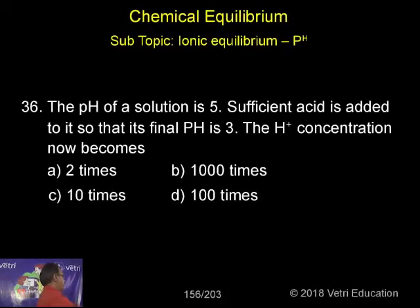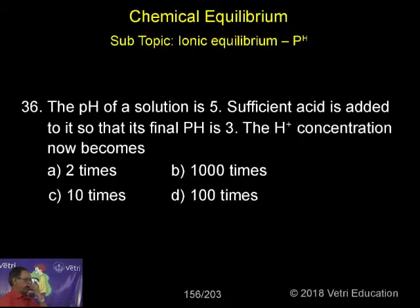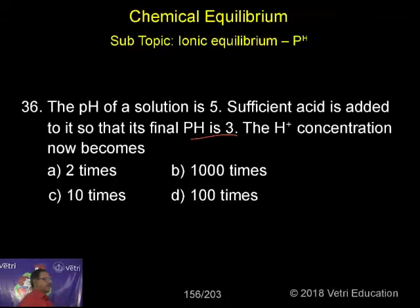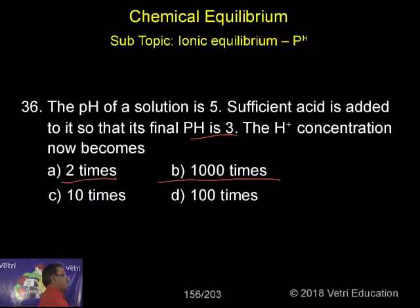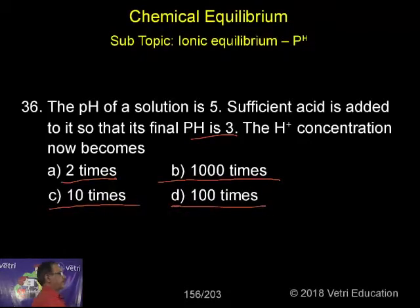Next question, 36. The pH of a solution is 5. Sufficient acid is added to it so that its final pH is 3. The H⁺ concentration now becomes: A) 2 times, B) 1,000 times, C) 10 times, D) 100 times.